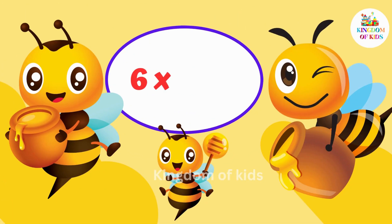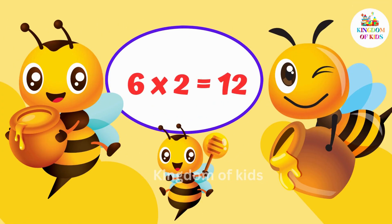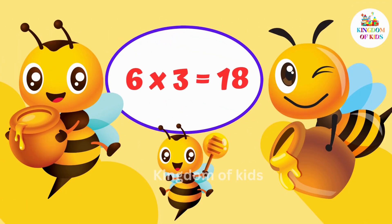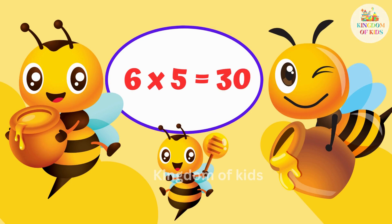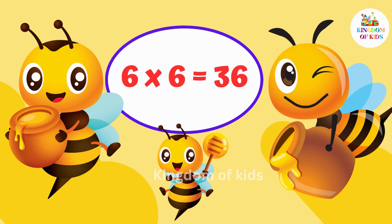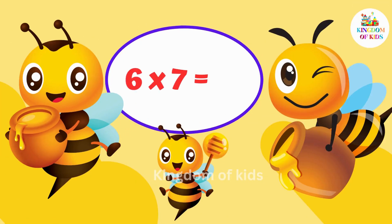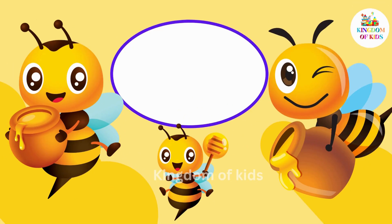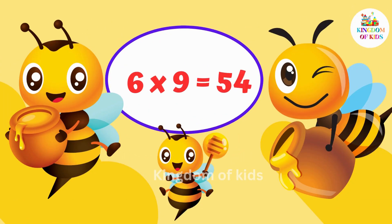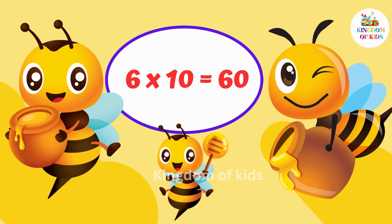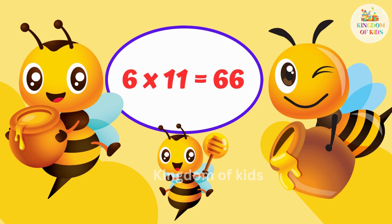6 1's are 6. 6 2's are 12. 6 3's are 18. 6 4's are 24. 6 5's are 30. 6 6's are 36. 6 7's are 42. 6 8's are 48. 6 9's are 54. 6 10's are 60. 6 11's are 66. 6 12's are 72.